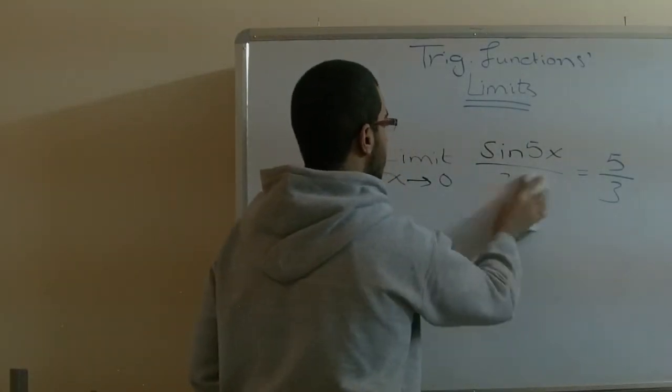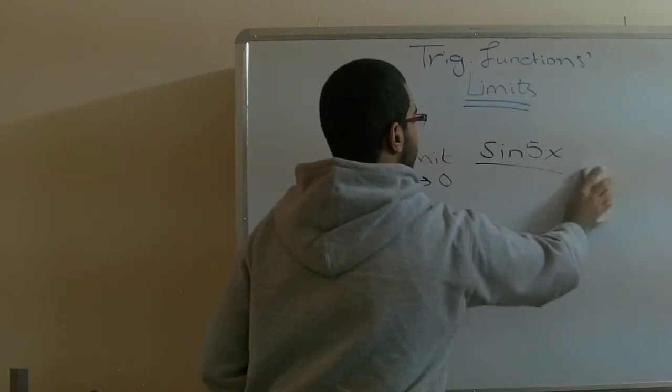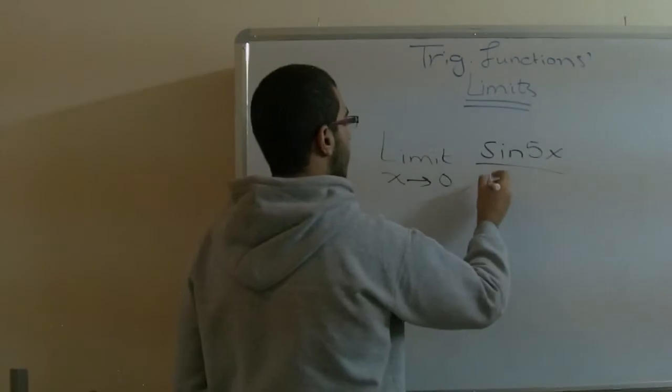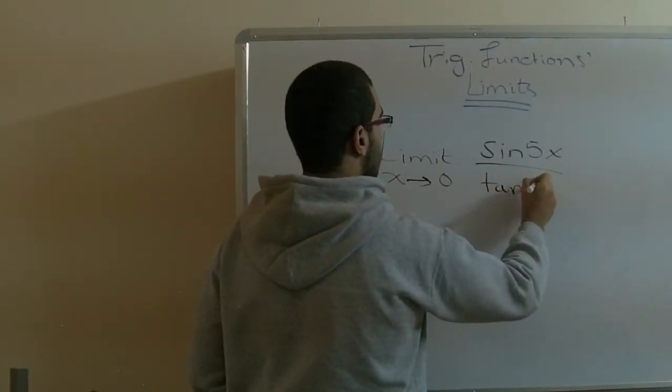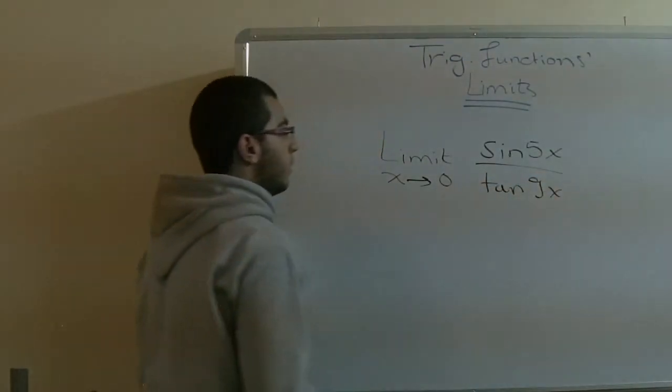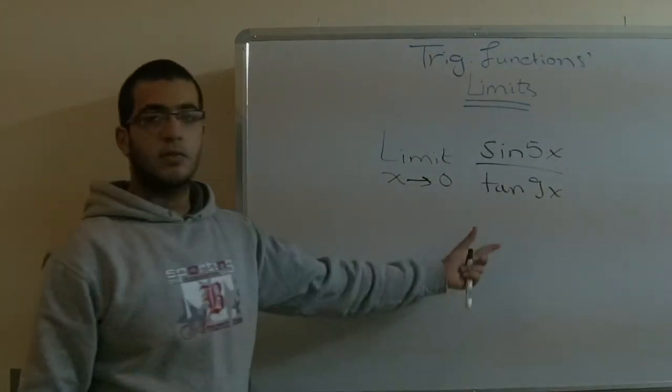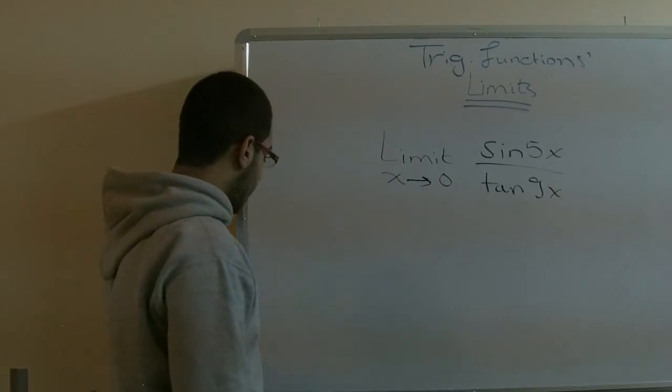We could have something that looks like this: sine 5x over tan 9x, for example. So here we have sine x over tan x. We didn't mention it, but it's very simple.